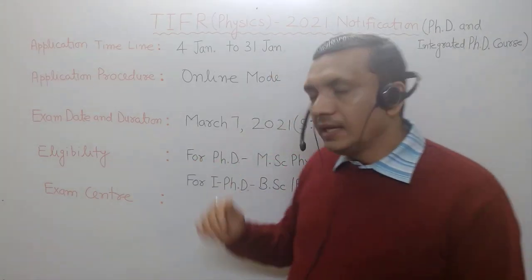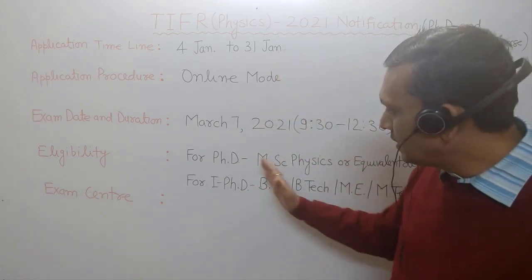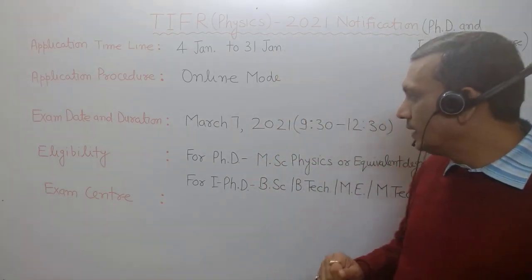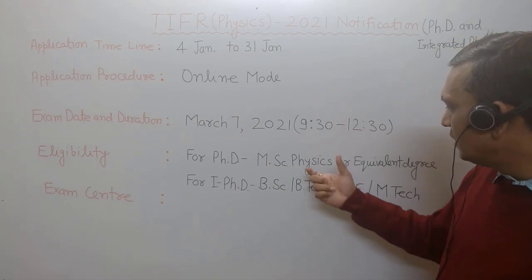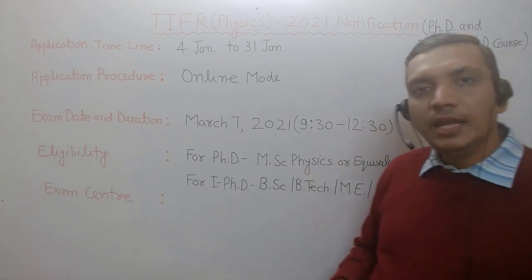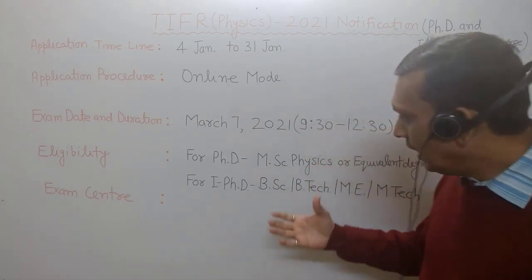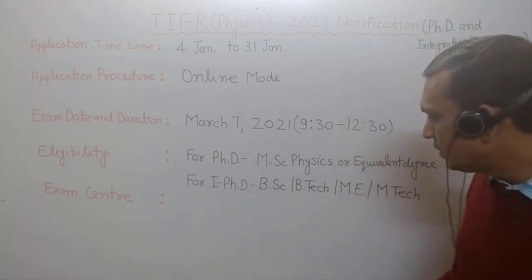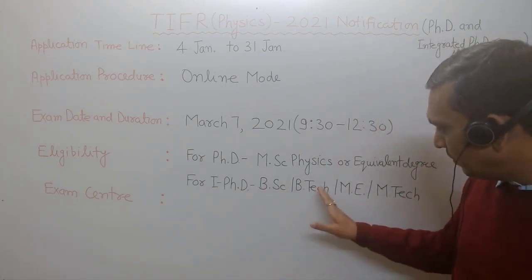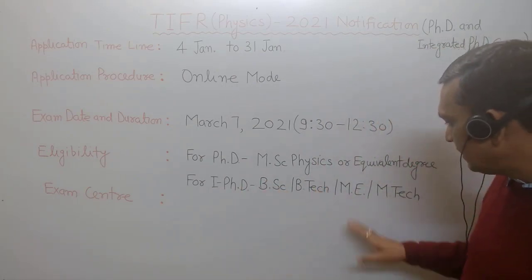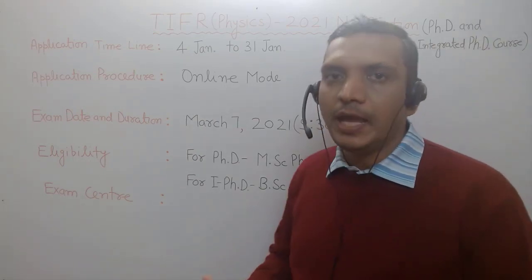If you see the eligibility criteria, for PhD students, eligibility is an MSc in Physics or an equivalent degree. And for the integrated PhD course, BSc students, BTech students, ME and MTech students can apply.